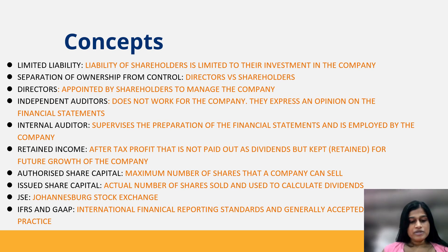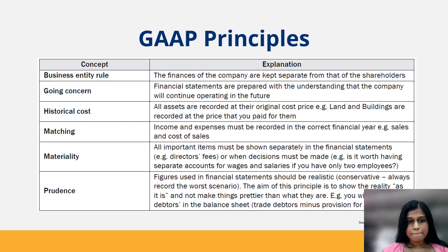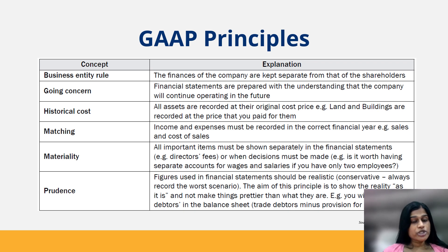IFRS and GAAP represent the International Financial Reporting Standards and Generally Accepted Accounting Practice, which govern how accountants should prepare financial statements. The business entity rule states that the finances of the company are kept separate from those of the shareholders — similarly to the separation between ownership and management of the company.